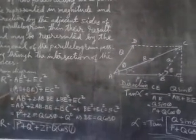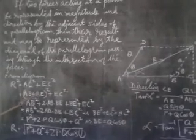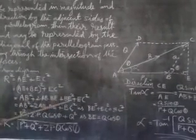From the figure, you get AE equals AB plus BE. So, AB plus BE, the whole square, plus EC square. Expand this: AB square plus 2AB·BE plus BE square plus EC square.